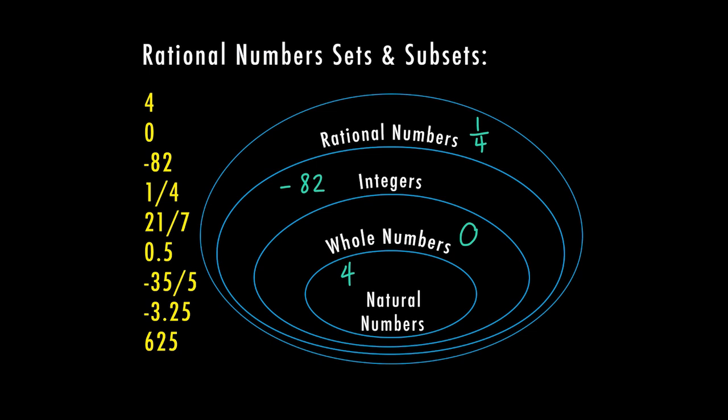So 21 over 7, I do need to put these in simplest form. And if I were to divide 21 by 7, because it is a fraction, I would get the number 3. So because that is a natural number, 21 over 7 goes in the natural number category. 0.5 is a decimal, that would be a half. So that goes into my rational numbers.